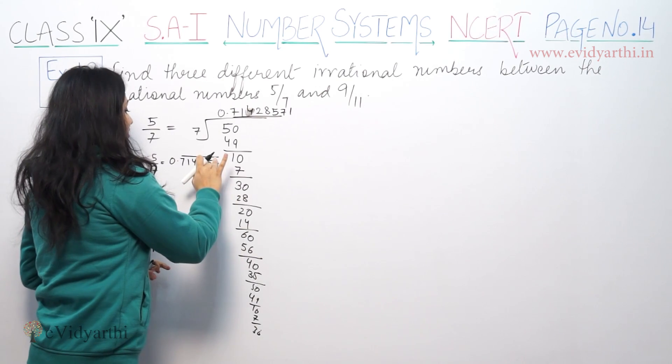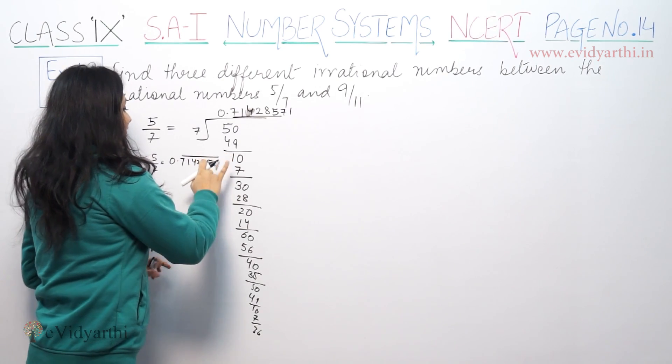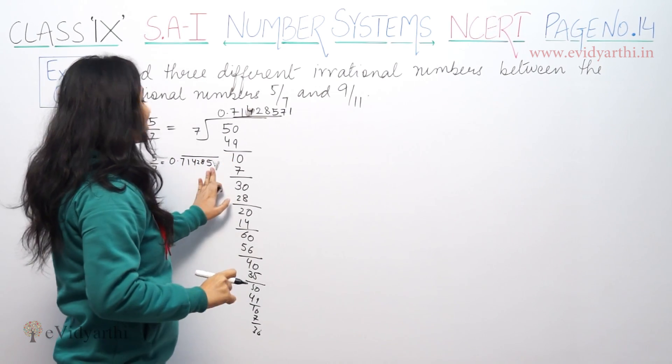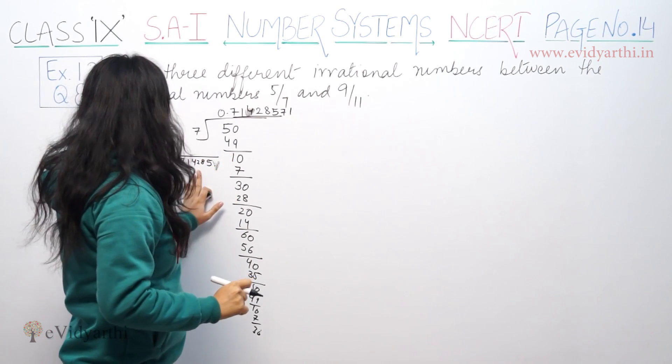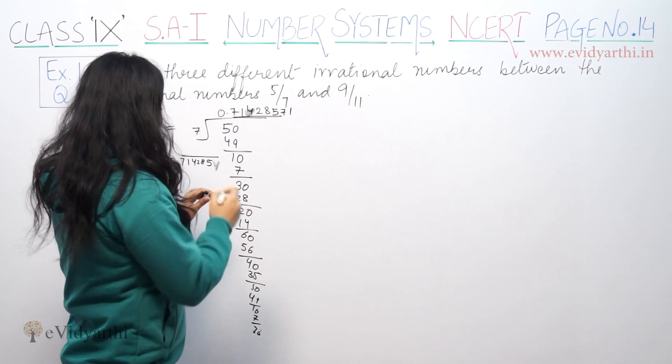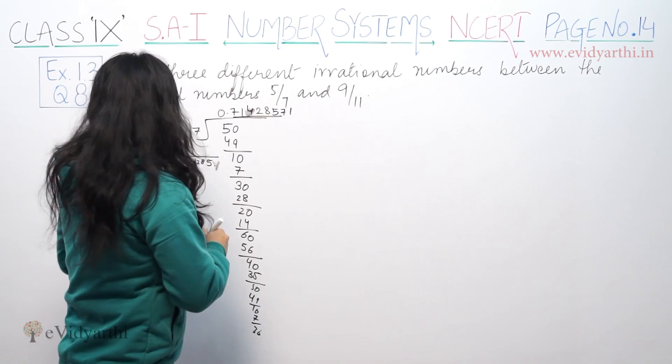The decimal expansion of 5 by 7 is 0.714285 — with 285 and the full block repeating. This is the decimal expansion.